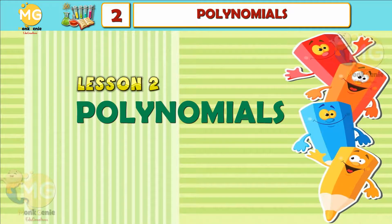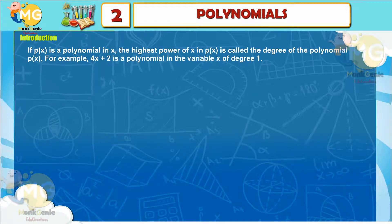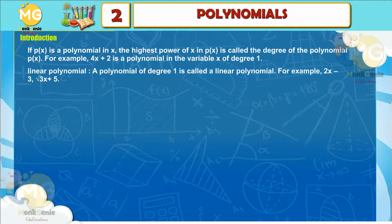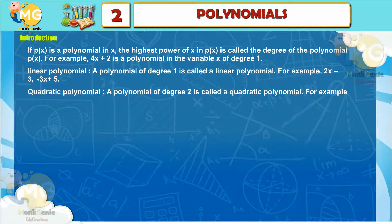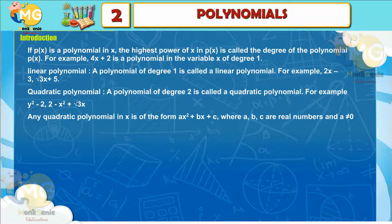Lesson 2: Polynomials Introduction. If p(x) is a polynomial in x, the highest power of x in p(x) is called the degree of the polynomial p(x). For example, 4x + 2 is a polynomial of degree 1. A polynomial of degree 1 is called a linear polynomial. For example, 2x − 3, √3x + 5. A polynomial of degree 2 is called a quadratic polynomial. Any quadratic polynomial in x is of the form ax² + bx + c, where a, b, c are real numbers and a ≠ 0.